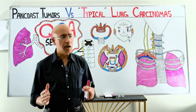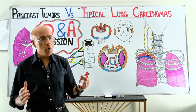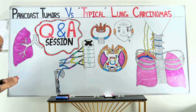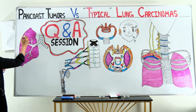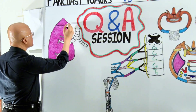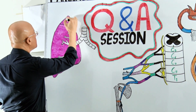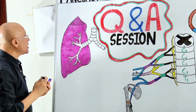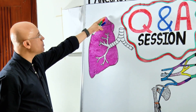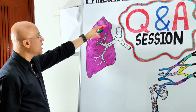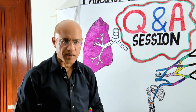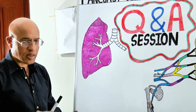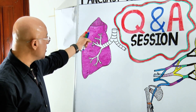Pancoast tumors are also cancers of the lung or lung carcinomas, so how do they differ from others? Those tumors which appear in the uppermost part of the lung — primary carcinomas which originate in the apical part of the lung, especially around the superior sulcus, the superior pulmonary sulcus — they are called Pancoast tumors.